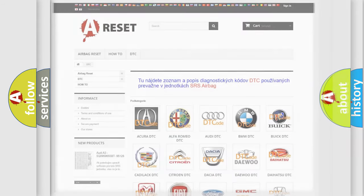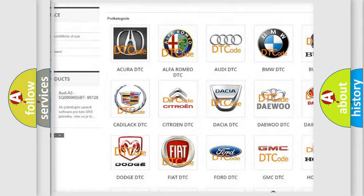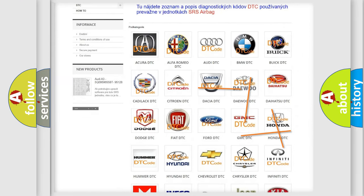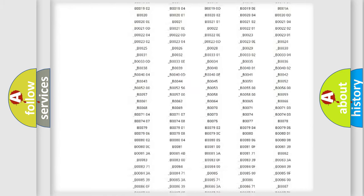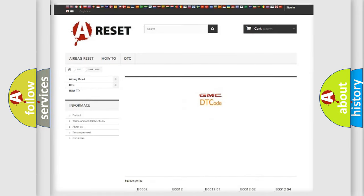Our website airbagreset.sk produces useful videos for you. You do not have to go through the OBD2 protocol anymore to know how to troubleshoot any car breakdown. You will find all the diagnostic codes that can be diagnosed in GMC vehicles.